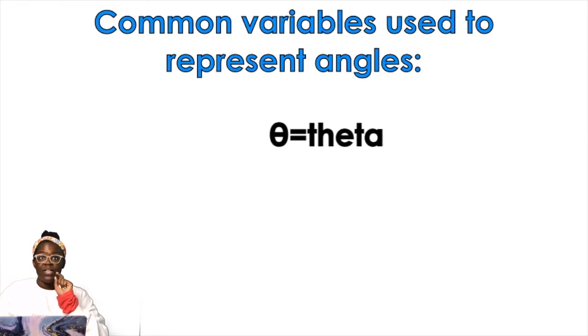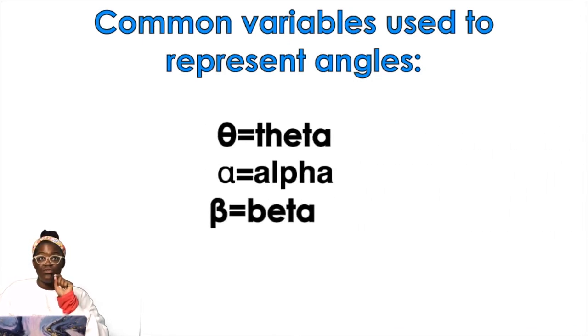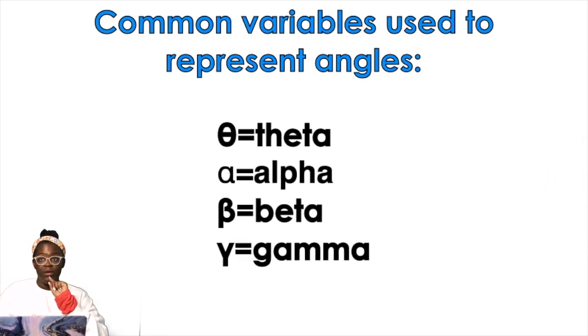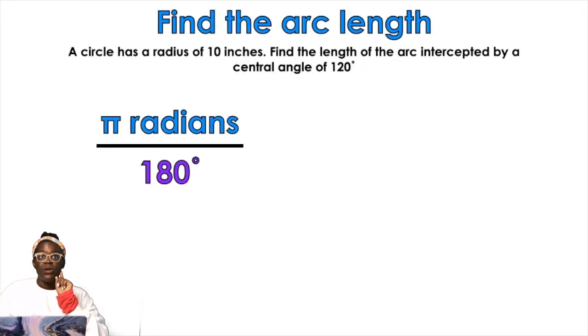Okay, common variables used to represent angles instead of theta you could do alpha, beta, or gamma. Those are common. So if a circle has a radius of 10 inches, find the length of the arc intercepted by a central angle of 120 degrees. You see me, it's really small back there. That's why I'm like I can't really see that.